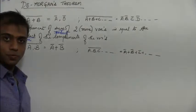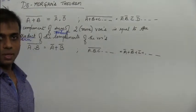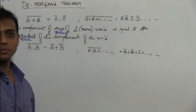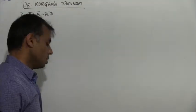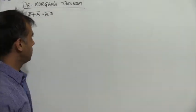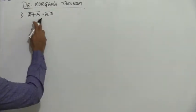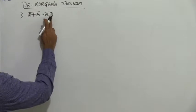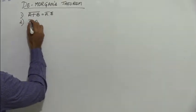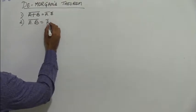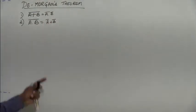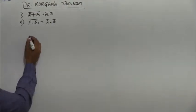Now how do we prove De Morgan's theorem? Let's consider the proof for two variables. We have A plus B whole bar equals A-bar dot B-bar, and the second expression A dot B whole bar equals A-bar plus B-bar. We need to prove this for two variables.